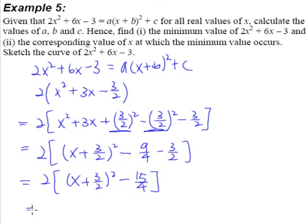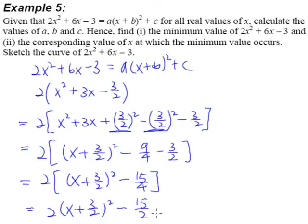The next step is to multiply in the 2, and we are almost done. So we have 15 over 2. This will be in the form that the question wanted. From here we can find out the values of A, B, and C simply by comparing.